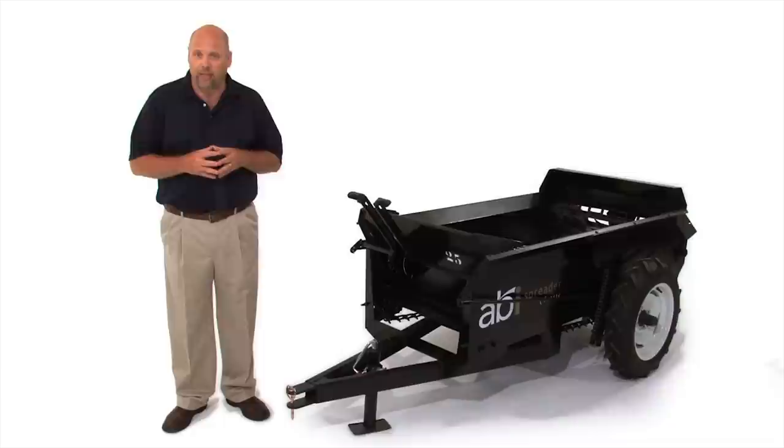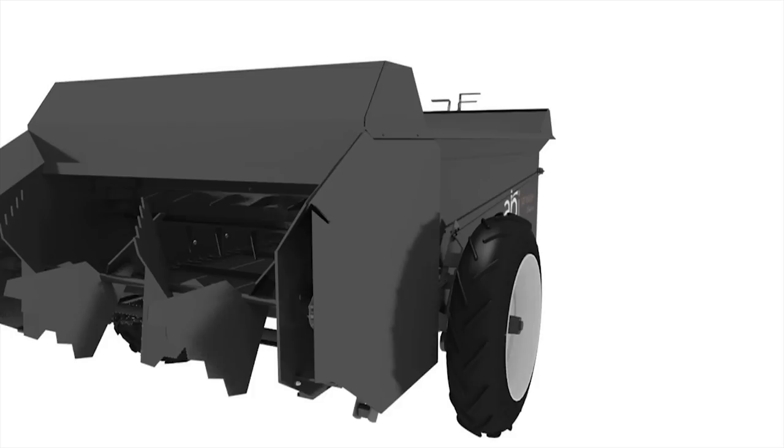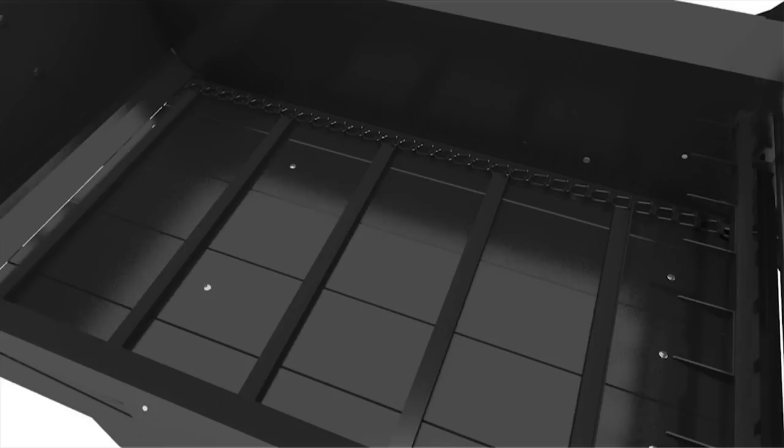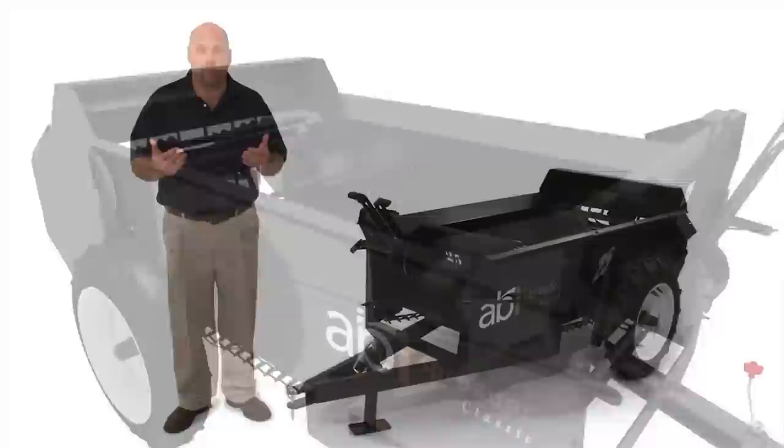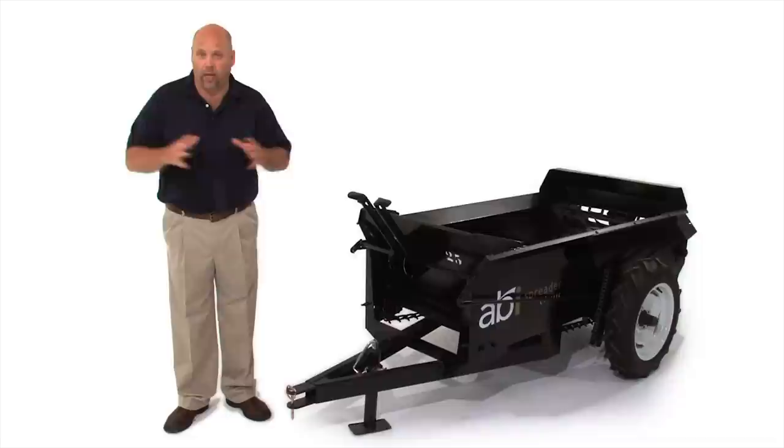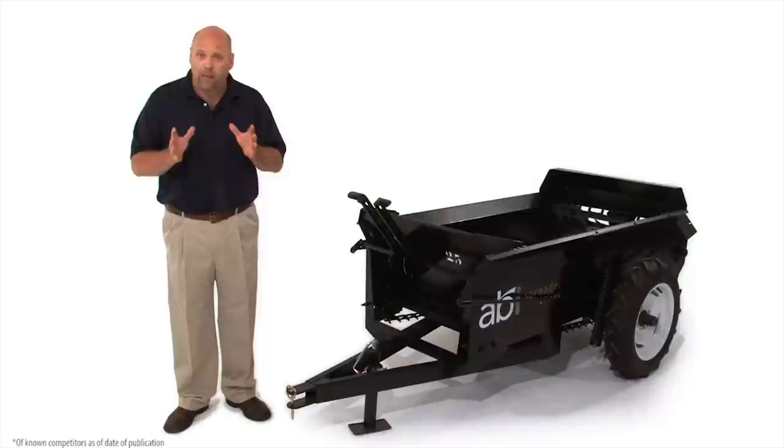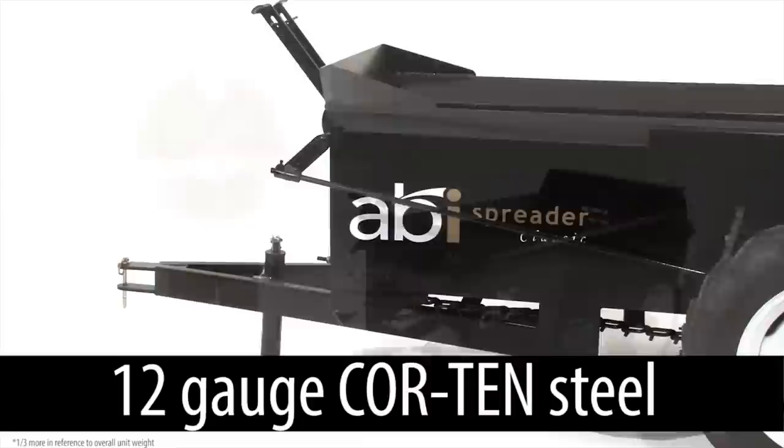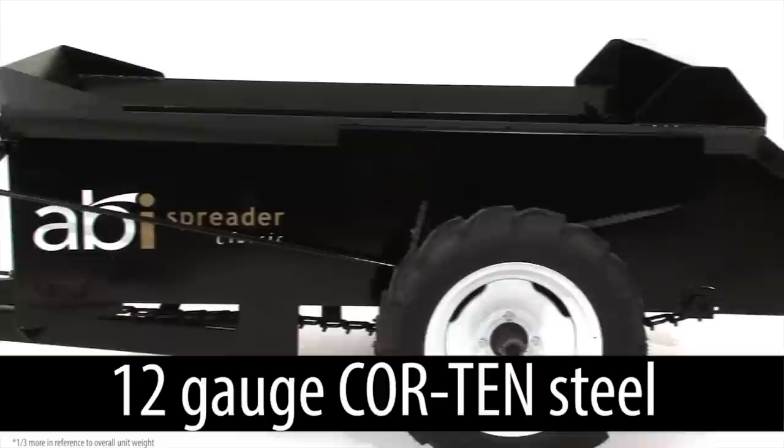Before I get into the specifics of the Classic Spreader from ABI, I want to talk about the overall construction of the ABI Classic Spreader. This spreader weighs one-third more than all of its competitors and there's a good reason for that. Number one, it is completely welded frame. Most of our competitors have bolt together frames. The ABI Spreaders are 100% welded and they're made out of a core 10 steel. This core 10 steel weighs one-third more than standard mild steel and it is corrosion resistant.